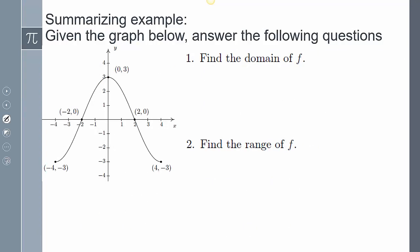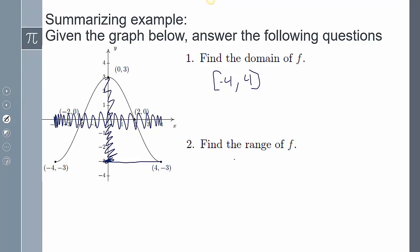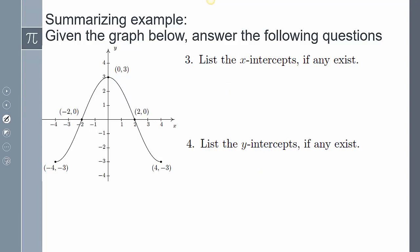Now let's work through a practice problem and summarize the different elements we've covered. For this graph, find the domain of f. The domain goes from negative 4 to positive 4. Find the range: projecting onto the y-axis, it goes from negative 3 to positive 3. List the x-intercepts: those are at negative 2, 0 and positive 2, 0.